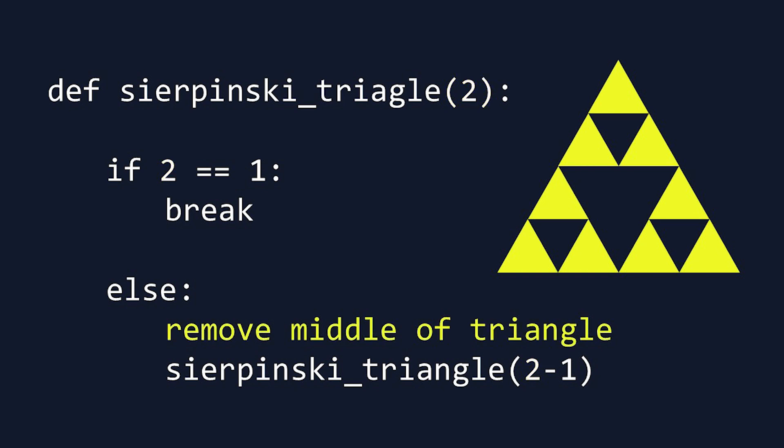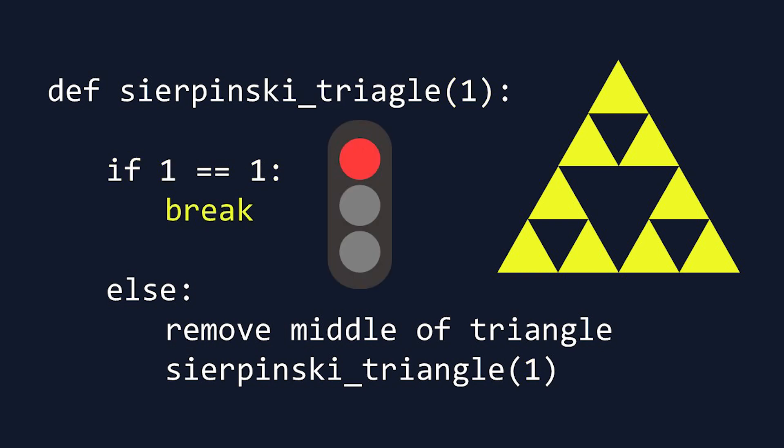This creates 9 new triangles, all of size 1. The function runs one last time, operating on triangles with a size of 1. Here, our size now equals our min size, so we've reached our base case and we should now stop the recursion.